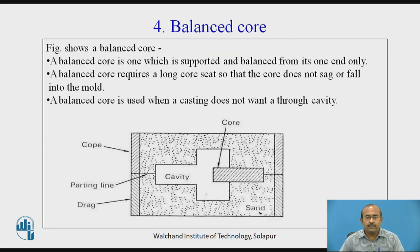Balanced core. A balanced core is one which is supported and balanced from its one end only. It requires a long core seat so that the core does not sag or fall into the mold. A balanced core is used when a casting does not require a through cavity.